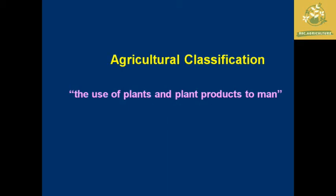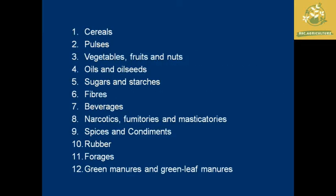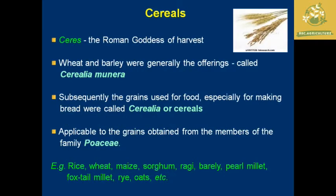Most of the agricultural classifications are made based on the use of plants as well as the plant products made from them. There are mainly twelve categories: cereals, pulses, vegetables, fruits and nuts, oils and oil seeds, sugars and starches, fibers, beverages, narcotics, fumitories and masticatories, spices and condiments, rubber, and forages including green manures and green leaf manures.